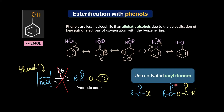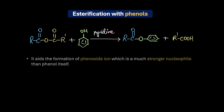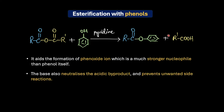So what does the reaction look like? The reaction of acid anhydride with phenol gives us a phenolic ester, and the byproduct in this case is a carboxylic acid. This reaction is more effective and commonly carried out in the presence of a base like pyridine. The base primarily aids the formation of a phenoxide ion, which is a much stronger nucleophile compared to phenol. The base also neutralizes the acidic byproduct formed in this reaction.